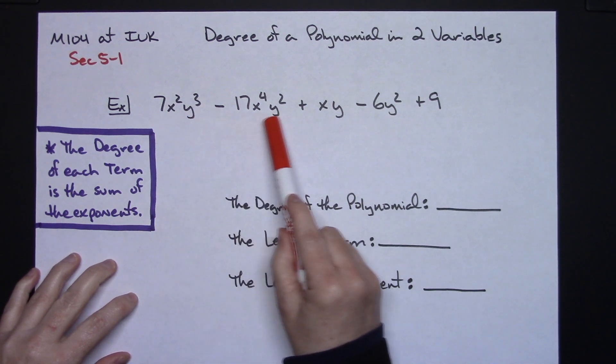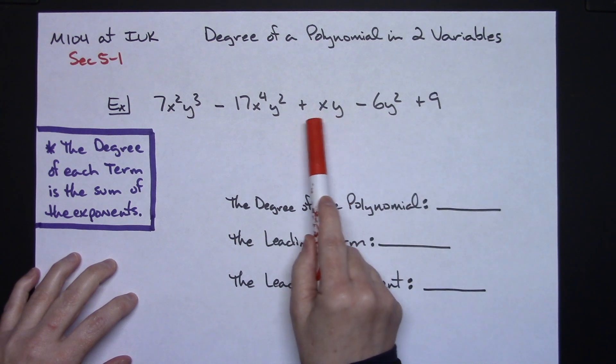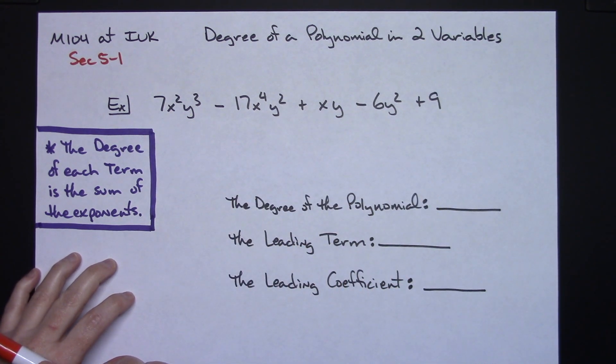In this example I have a polynomial right here that I'm going to be working with. It is in two variables because you see I've got x and y in both of these.